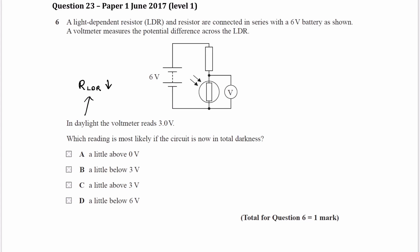When we go to total darkness, the light intensity changes significantly from daylight — there will be significantly less light. And therefore, the resistance of the LDR would increase significantly.